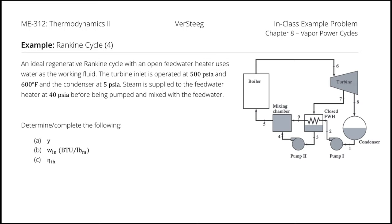Like the previous example, we need to identify two independent intensive properties for all nine state points. The presence of the closed feedwater heater means we either have to pump the fluid back up to high pressure before mixing, or use a trap or expansion valve to drop it back down to low pressure before mixing. Either way, there are additional steps, and we need a separate place for the water to join back together — essentially an open feedwater heater — just to allow the streams to mix. That's why we have nine state points instead of seven.